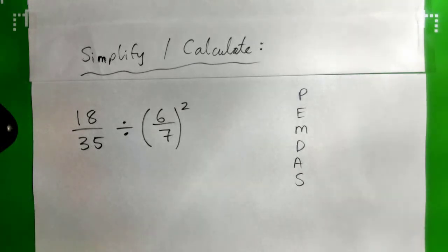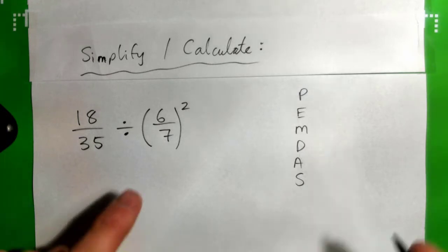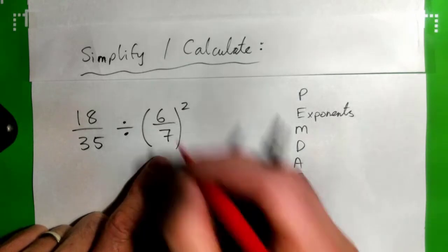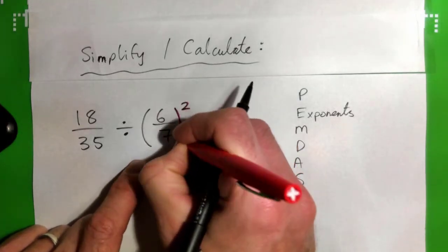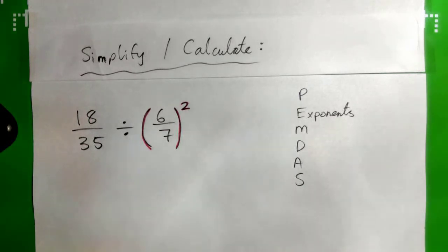We do have parentheses, but it's just 6/7 in there, it's already simplified. So moving on to exponents, we do have an exponent, that squared touching the parenthesis. So let's just apply that.